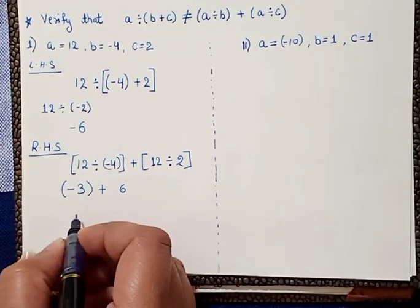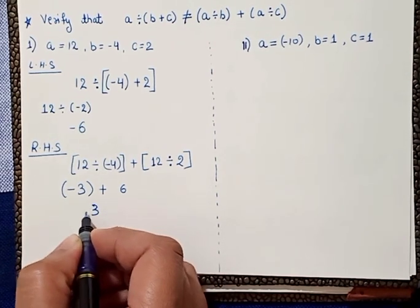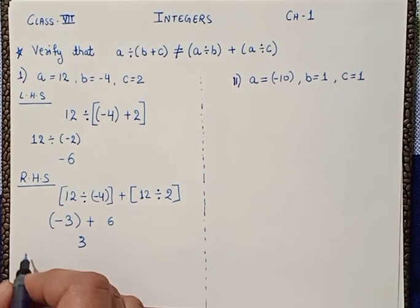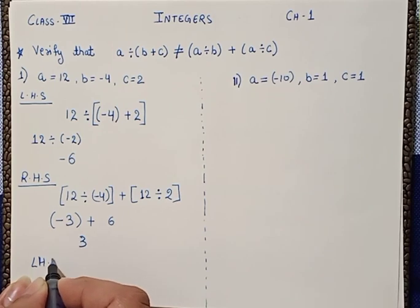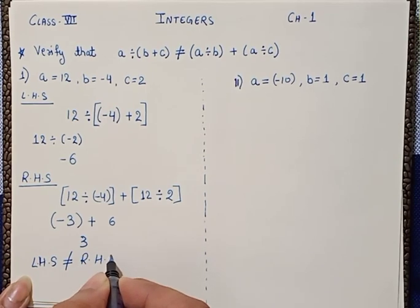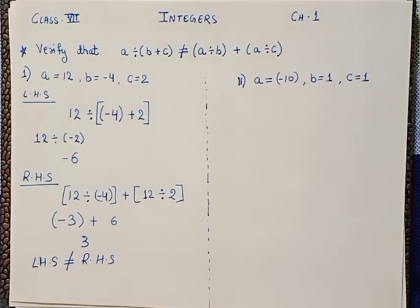Now solving these two, minus 3 plus 6 gives us plus 3 as an answer. So here we can see that LHS value is minus 6, which is not equal to the right-hand side, plus 3. This verifies the given equation.